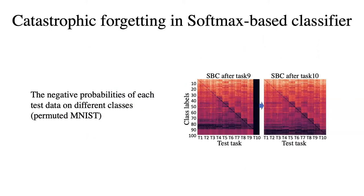Virtually all existing continual learning approaches are based on the softmax-based classifier, and we find that softmax normalization is one of the main reasons that causes catastrophic forgetting.